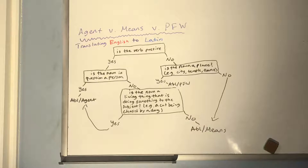Continuing the flowchart: if the verb is not passive and the noun is not a place, it will be ablative of means. Remember, ablative of means is only translated using 'with' or 'by.' If it is a 'from' translation but both questions are answered no, that is ablative of separation — a different use you won't be responsible for until Latin 3.